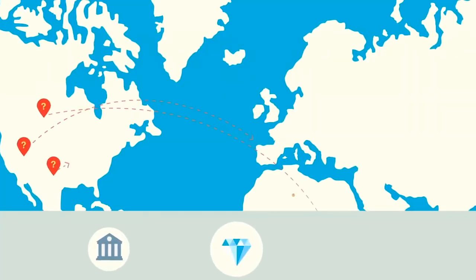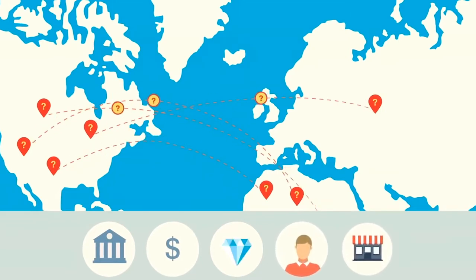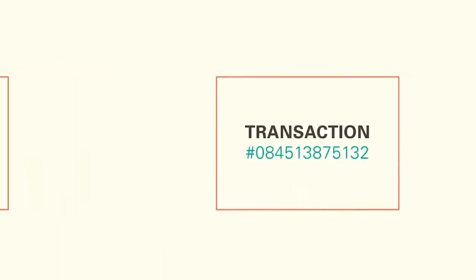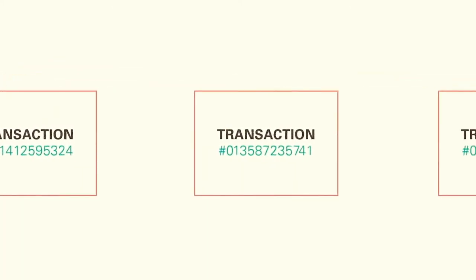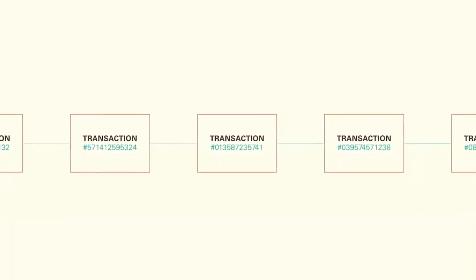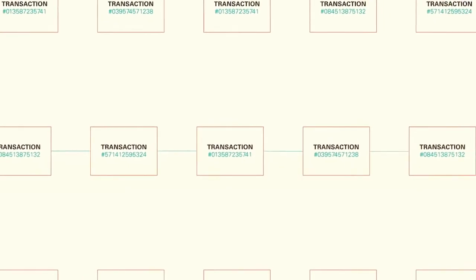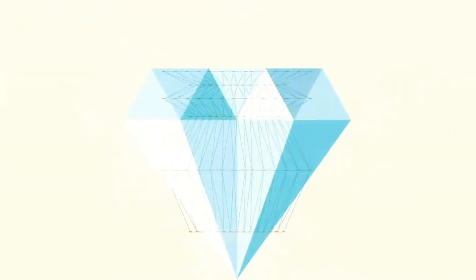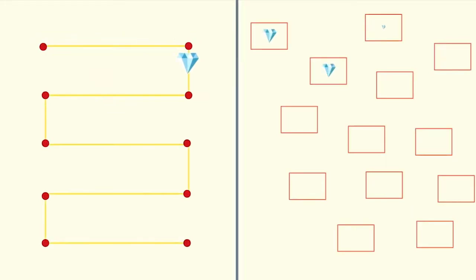Diamond smuggling and fraud can hamper governments from collecting fair export taxes, and consumers and retailers face the prospect of purchasing counterfeit or unethically mined stones. This is where Hyperledger blockchain technology comes in — it has the potential to eliminate these vulnerabilities with transparent transactions. Blockchain offers all parties a secure and synchronized record of transactions. The blockchain ledger records every sequence of transactions from beginning to end. As each transaction occurs, it's put into a block. Each block is connected to the one before and after it, creating an irreversible chain — making blockchain ideal for recording the mining, refining, and distribution of diamonds, tracing a diamond's path from mine to consumer with exceptional security and transparency.